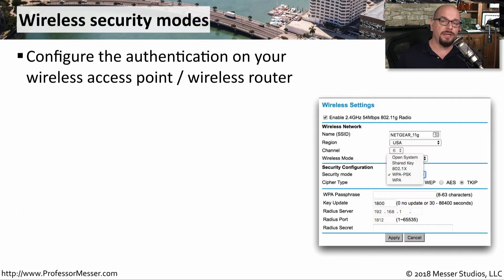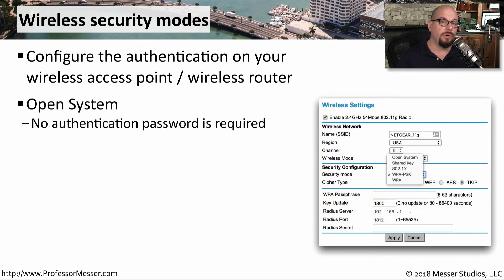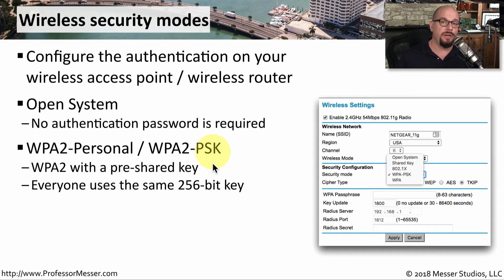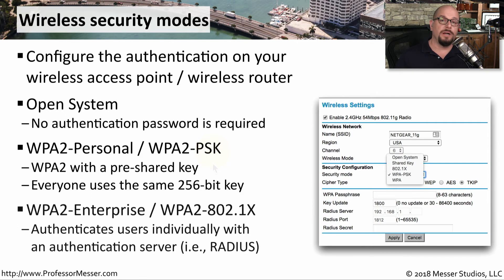When you're configuring the authentication type on your wireless devices, you'll have a number of options available from a configuration screen similar to this one. One option may be to not require any type of authentication on the wireless network — that would be defined as an open system where no password is needed. If you're at home or working in a small office, your wireless network may be configured with WPA2 Personal, also called WPA2-PSK, where PSK stands for pre-shared key. This means anybody who needs access to the network needs to know that pre-shared key.